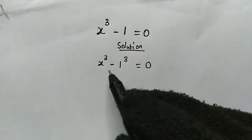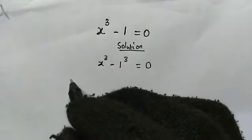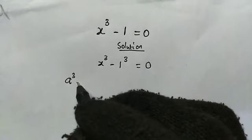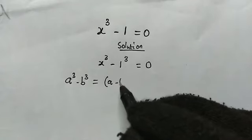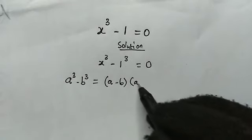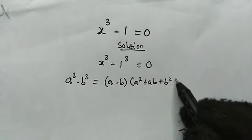From the left hand side, we're going to make use of the difference of two cubes formula. Remember, a cubed minus b cubed is equal to a minus b multiplied by a squared plus ab plus b squared.